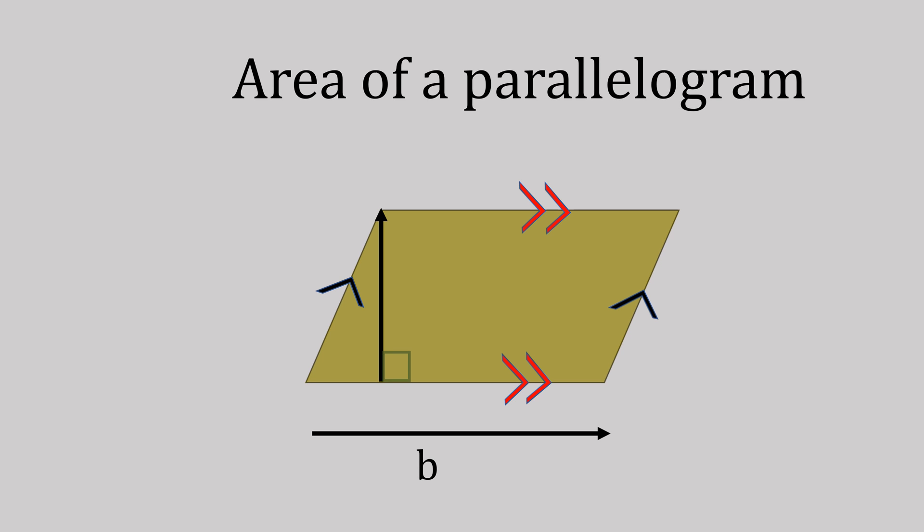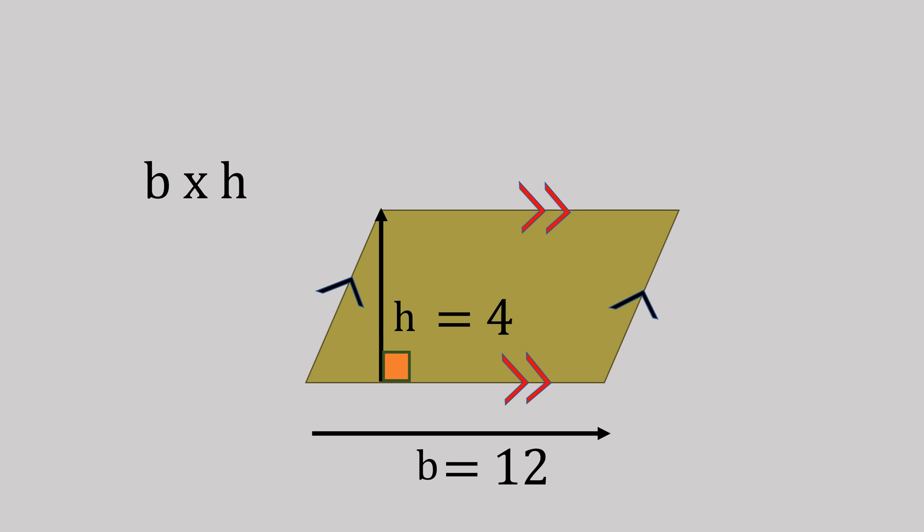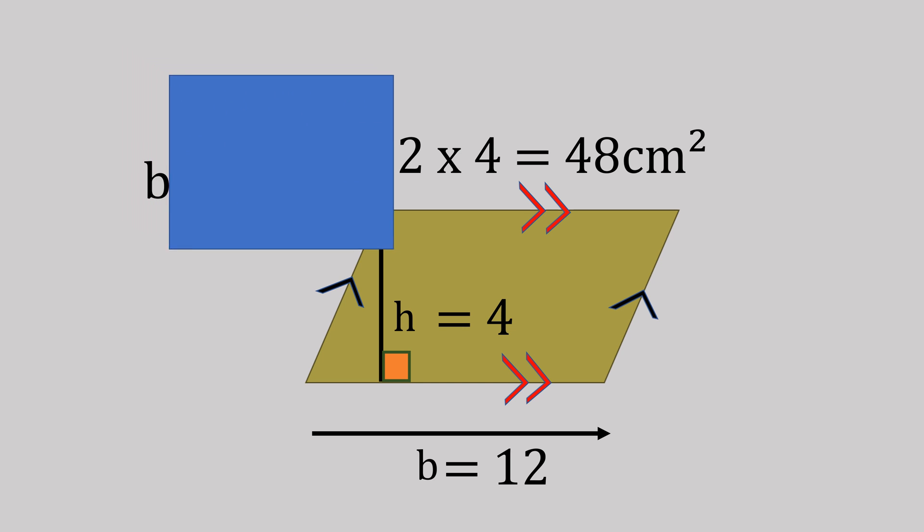You could see that would be a right angle. So we have base times height, and note it's the height and not the side length. So if our base is 12 and our height is 4, that would be 12 times 4, giving us 48. And if a rectangle had the same measurements, it would again have the same area, 48 centimeters squared.